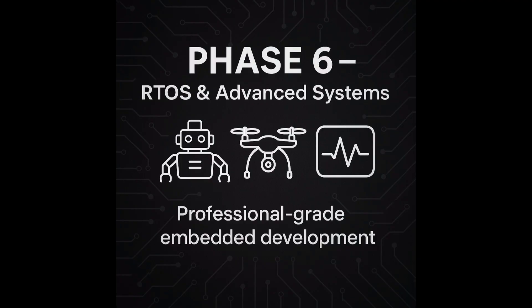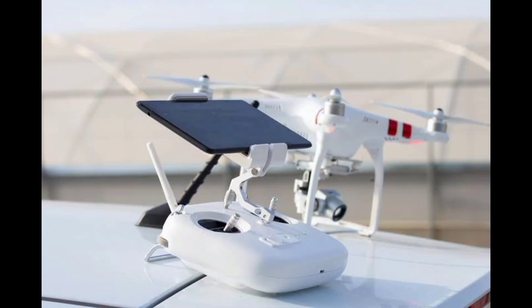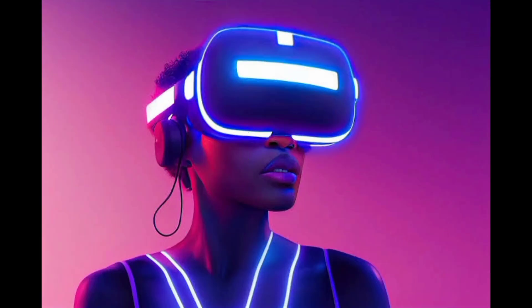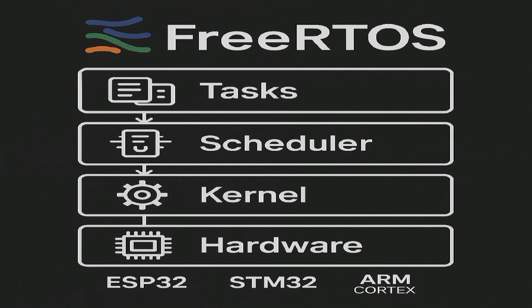Phase six is about building smart, responsive, and multitasking embedded systems, just like the ones in drones. Next on our roadmap is RTOS — Real-Time Operating System — a specialized operating system designed for embedded systems where timely and predictable responses to events are critical. It manages tasks, schedules resources, and handles interrupts to ensure time-sensitive applications perform as required within strict deadlines.